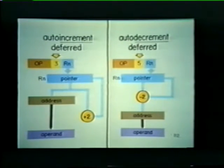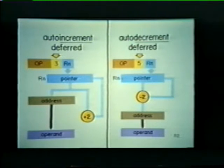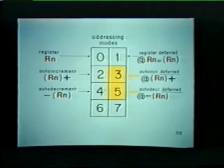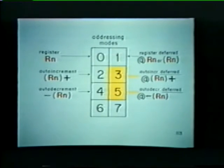There are also deferred forms of the auto increment and auto decrement modes. In these deferred modes, we increment or decrement a pointer to an address rather than the address itself. Whenever you're using these deferred modes, the pointer is always incremented or decremented by 2 and never by 1. The deferred forms are represented by symbols similar to auto increment and auto decrement, with the only change being the at symbol, which denotes we are operating in a deferred addressing mode.